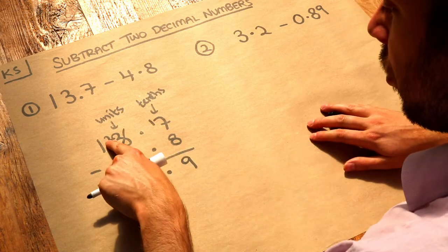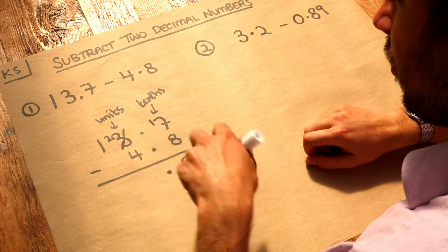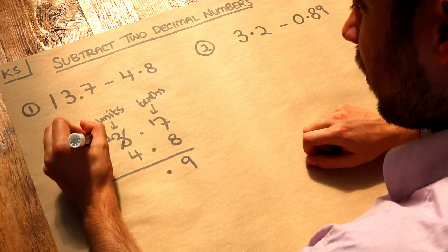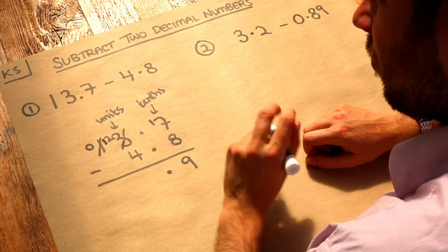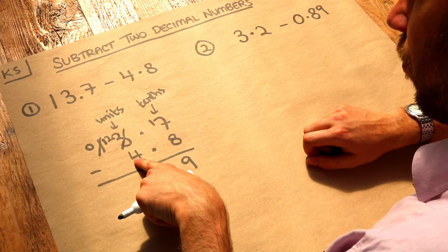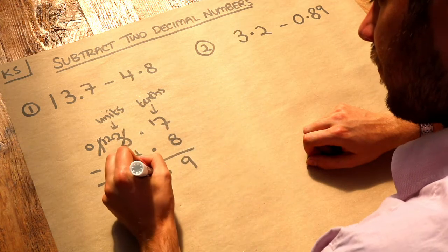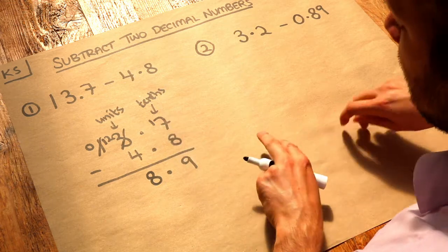Now we want to do 2 minus 4. Again, we can't do that because 4 is bigger than 2, so we have to borrow from here. The 1 becomes 0, which enables us to put a 1 here. Now we can do 12 minus 4, which is 8. And that is the solution. We've got 8.9. No further adjustment required.